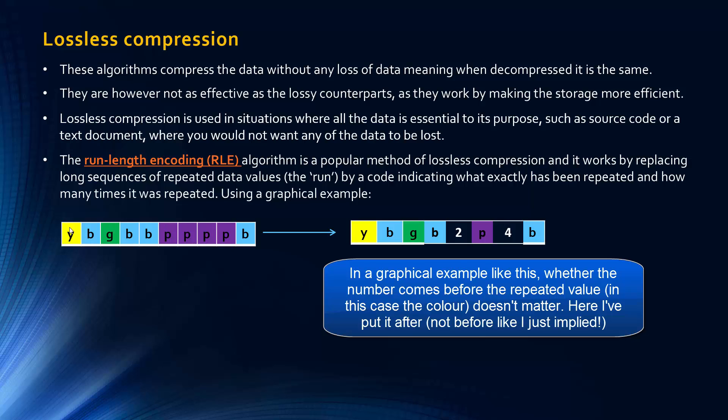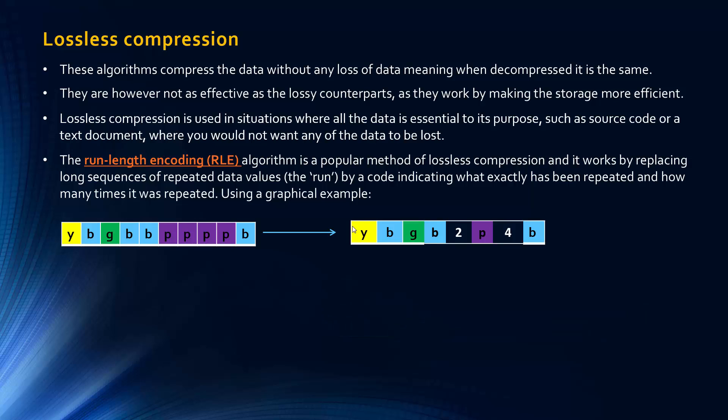If we run the run length encoding algorithm, what it's doing is collapsing runs of the same colour into a code. The code is the 2 and the P and the 4 and the B here. These ones initially, Y, B, G, they are on their own, so they're not going to be compressed, whereas B is repeated twice and purple is repeated four times, so we can reduce this to a code where we say how many times it's repeated. Blue is repeated twice and purple is repeated four times. This would reduce the length of our image file. Identical pixels are grouped to save storage space.